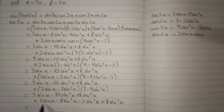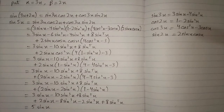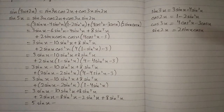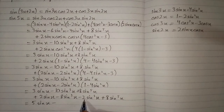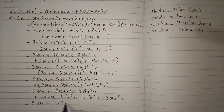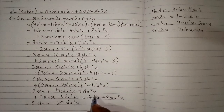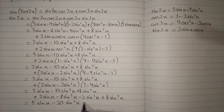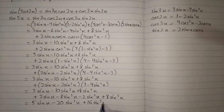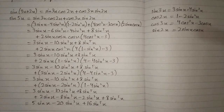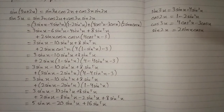Now collecting terms: 3 sine x plus 2 sine x is 5 sine x. And minus 10 sine cubed x minus 8 sine cubed x minus 2 sine cubed x is minus 20 sine cubed x. Plus 8 sine to the power 5x plus 8 sine to the power 5x is 16 sine to the power 5x. This is the required identity.